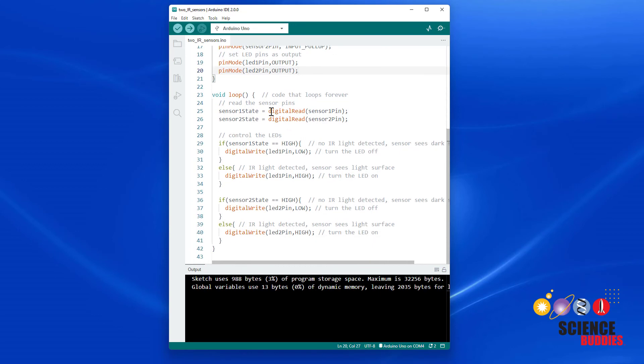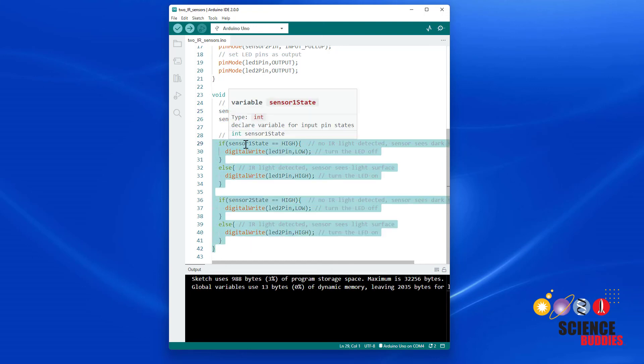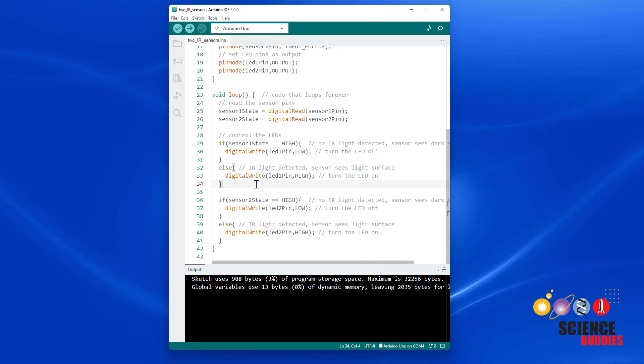I then need to set all of those pins as inputs and outputs in my setup function and in my loop function I have two digital read commands, one for each sensor pin and then I have two if else statements. One is for checking each sensor state. So one of these sensors is going to control LED one and then sensor two controls LED two.